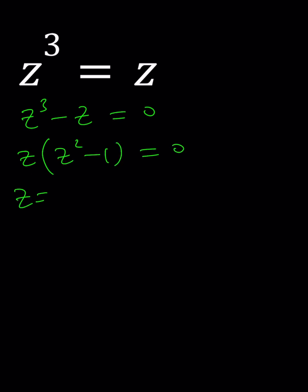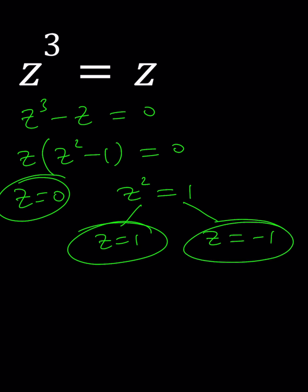From here we get z equals 0 or z² equals 1. So you've got to be careful - there are two numbers whose square equals 1, and those numbers are 1 and negative 1. There are basically three complex solutions to this equation: 0, 1, and negative 1. And that's it.